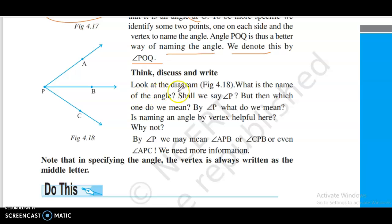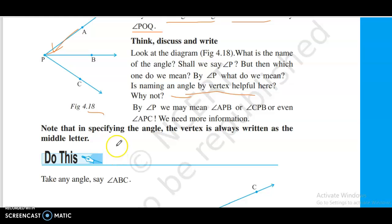Look at diagram 4.18. What is the name of the angle? Shall we say angle C? What do we mean by angle C? We may mean angle ACB, or even ADC. We need more information. Now that we see the angle, vertex is a better answer. The middle letter.